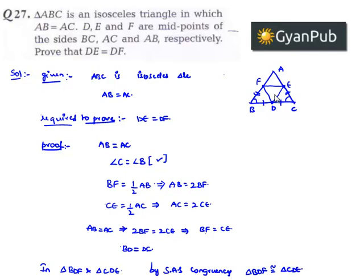When both triangles are congruent, the corresponding sides are equal. Therefore, DF equals DE. This is the required proof.